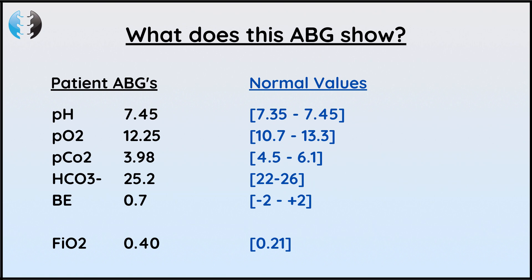So let's get into it. Your patient's ABG has just been taken and you're on the intensive care unit about to treat them. Let's check out what their ABGs show. We can see that their pH is 7.45, PO2 is 12.25, PCO2 is 3.98, HCO3- is 25.2, base excess is 0.7, and the FiO2 — the amount of oxygen being delivered to them — is 0.4, or 40%.